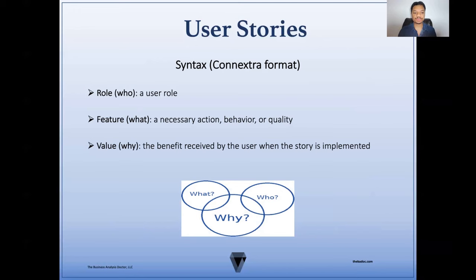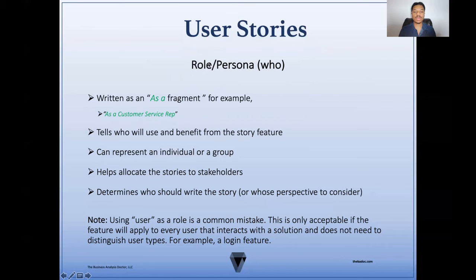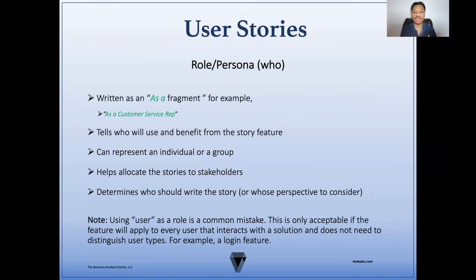Now let's look at each of these components in greater detail. Our role, or persona, is typically written as an 'as a' fragment. For example, 'as a customer service rep.' It tells us who will use and benefit from the story feature. It can represent an individual or a group, and it helps to allocate the stories to stakeholders. One thing to note is that using 'user' as a role is a common mistake. This is only acceptable for a feature that will apply to all users and does not need a distinguished user type — such as a login. You always want to have a specific role, persona, or actor so that we know who the story is for.